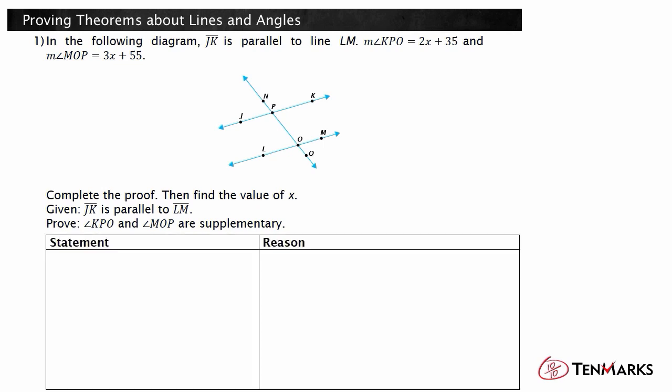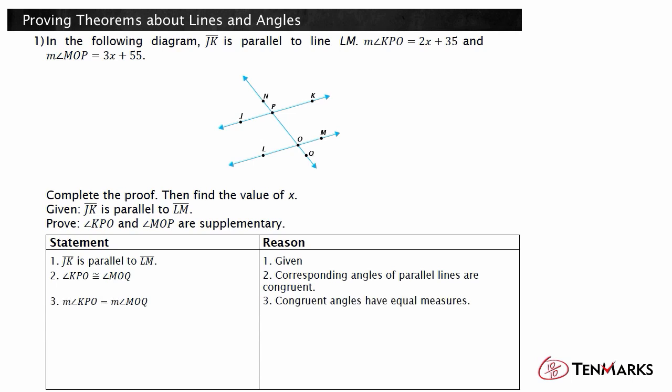Write a two-column proof with statements on the left and reasons on the right. Always start with the given in the proof. Line JK is parallel to line LM. Using the theorem of corresponding angles, you know that angle KPO is congruent to angle MOQ. Because angle KPO is congruent to angle MOQ, the measures of these angles are equal.